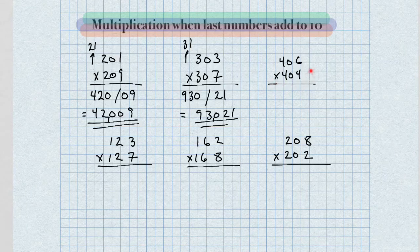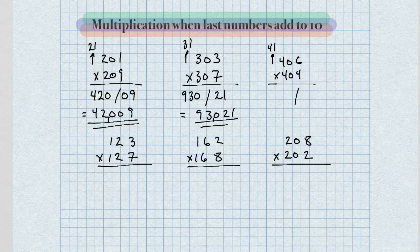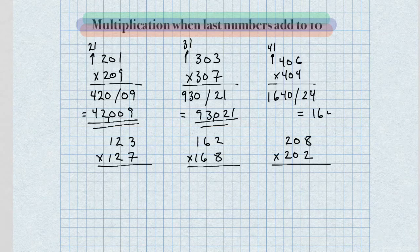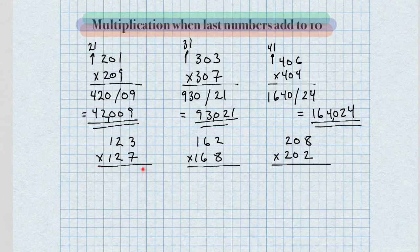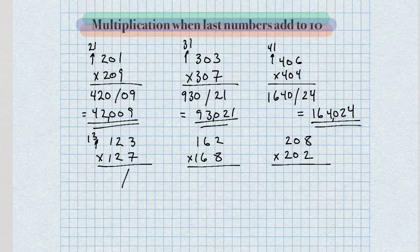Next problem, 406 times 404. Multiply the next number up, which is 41. So for our left-hand side, we get 40 times 41, which is 1,640. And for the right-hand side, 6 times 4 is 24 — there is our answer. Next, 123 times 127 — the next number up from 12 is 13. So 12 times 13 for our left-hand side gives us 156. For our right-hand side, 3 times 7 equals 21 — there is our answer.